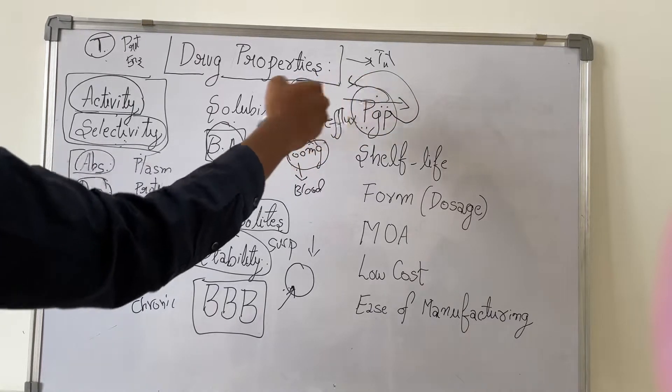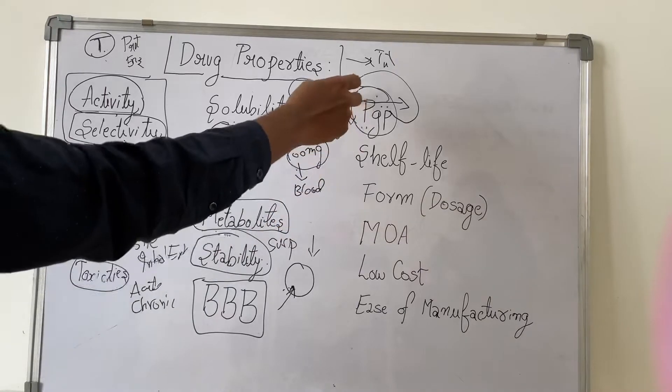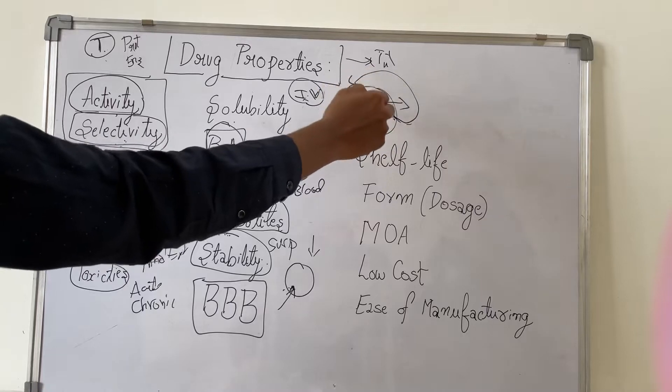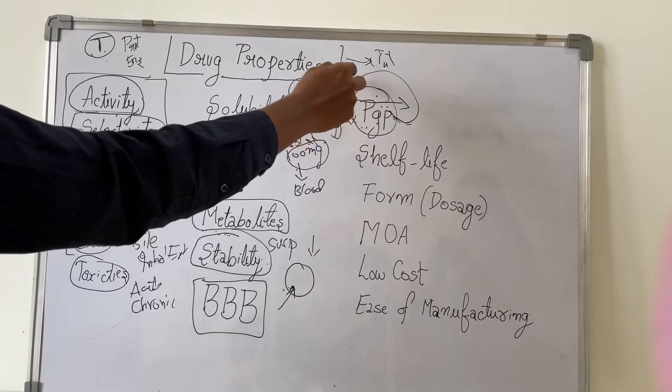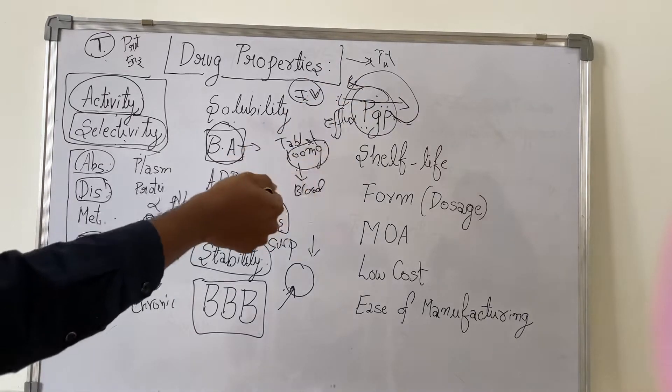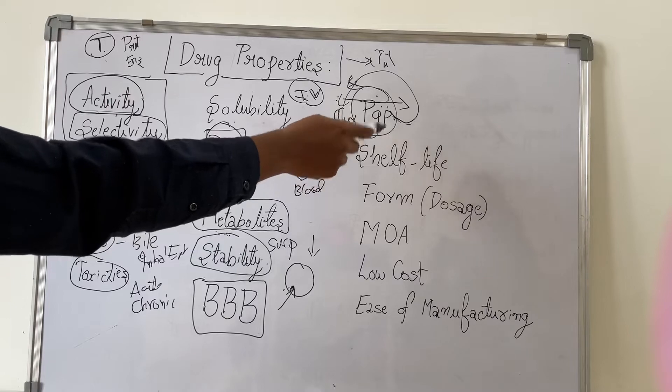This will be excreted by the body. So though the drug has been given, though it has absorption, if this PGP is effluxing it, the drug will not be in the body. So it is of no use even if you use the drug. We should need to know how much activity this PGP is doing on the drug.